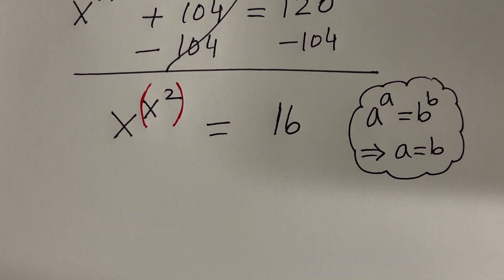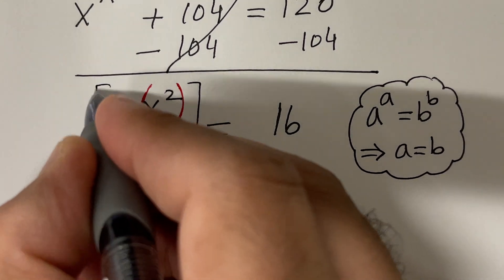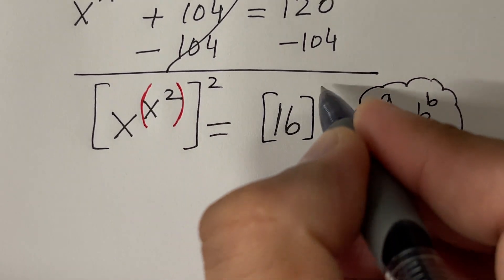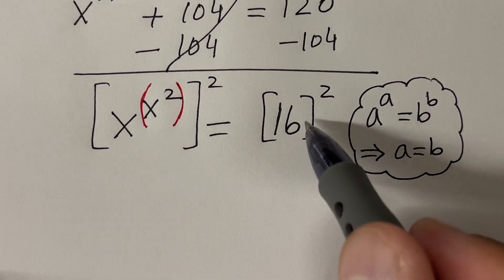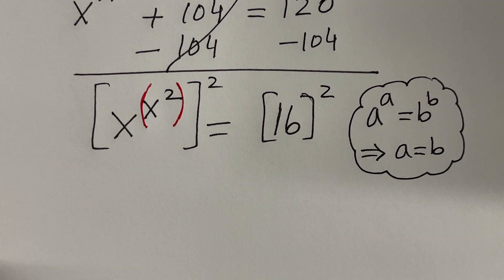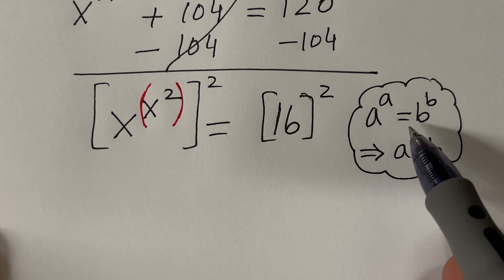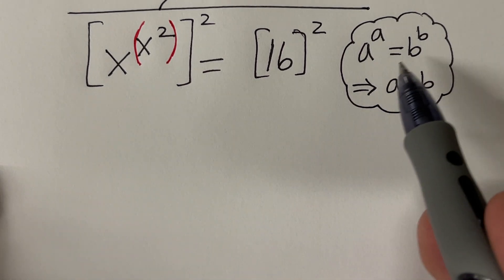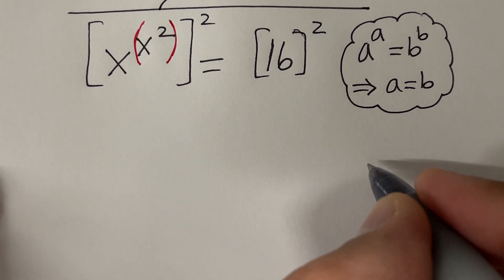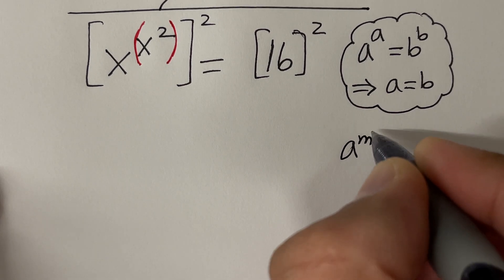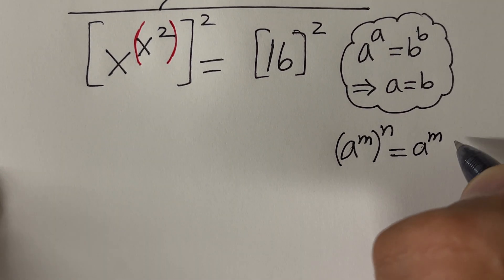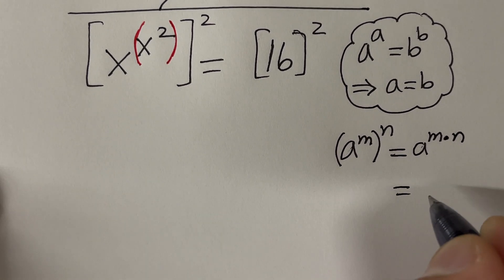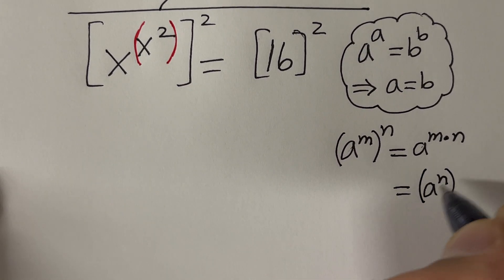In order to do that, I'm going to take the power 2 on both sides. On the left hand side, I'll use the property: a raised to the power m raised to the power n equals a raised to the power m times n, which is further equal to a raised to the power n raised to the power m. This property says if you have parenthesis, you can switch the roles of m and the exponent — you can move the inner exponent to the outside.